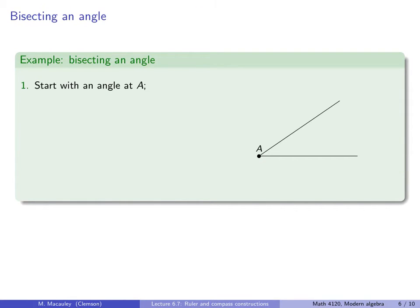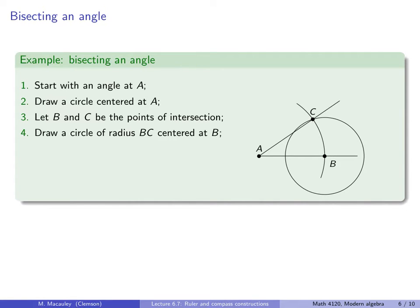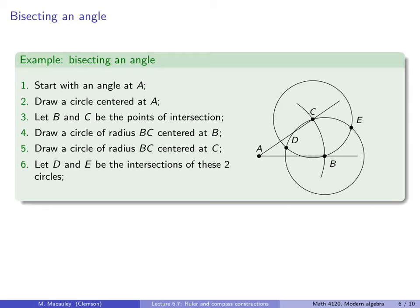Now let's see how to bisect an angle. Start with an angle at a point A. Draw a circle centered at A, and let B and C be the points of intersection with the angle's rays. Then draw a circle of radius BC centered at B, and another circle of radius BC centered at C. Let D and E be the intersections of these two circles. Finally, draw a line through D and E, which bisects angle A.